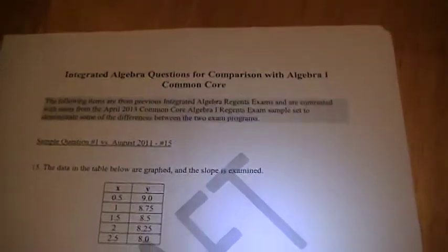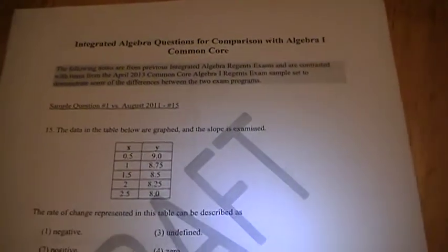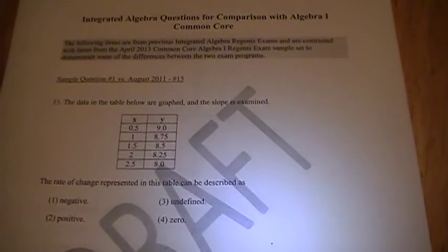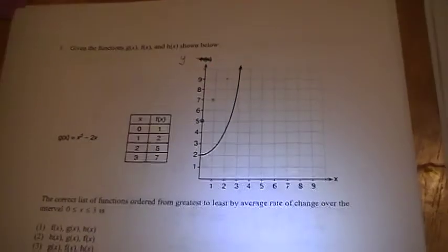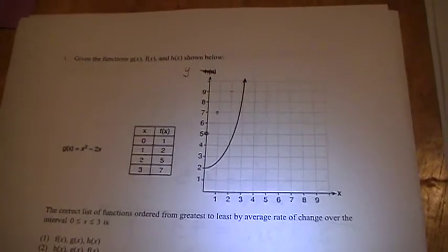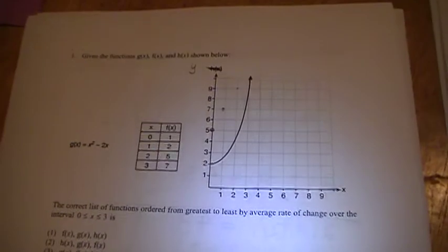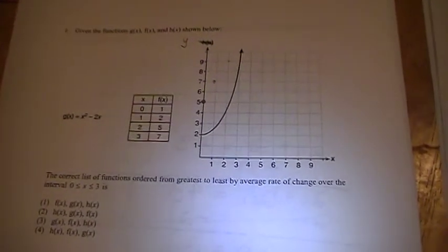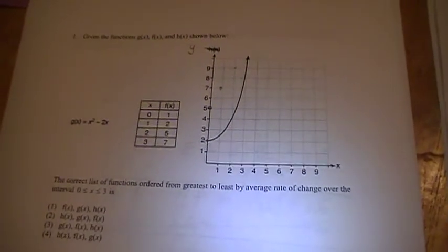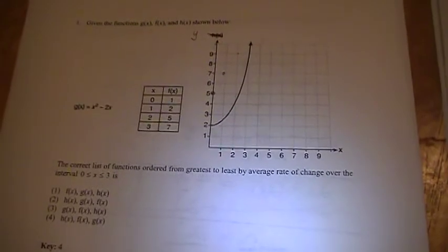So here's the first sample question. It shows an xy table and we're supposed to find the rate of change. Here's the new one. It shows three different functions: F of x in the middle is an xy table, G of x is a formula, H of x is a graph, and we're supposed to find the average rate of change over the interval. So when I first saw this, I thought oh my gosh, it's so much harder.